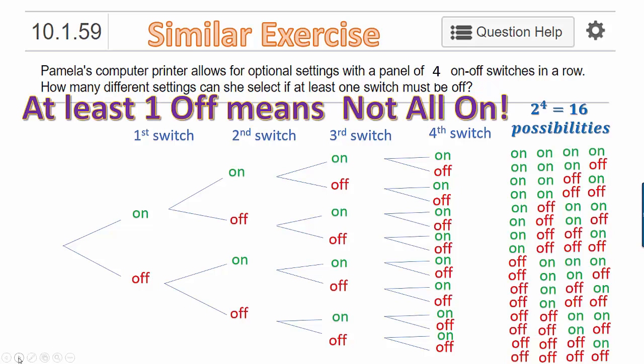Keep in mind that at least one off means that not all of them are on. So all we have to do is cross off the scenario where all of them are on and everything left has at least one off. Since there were 16 total, 16 minus one is 15 ways where we can have at least one switch be off.